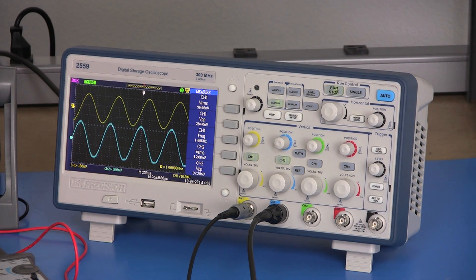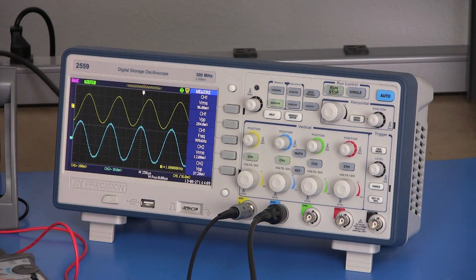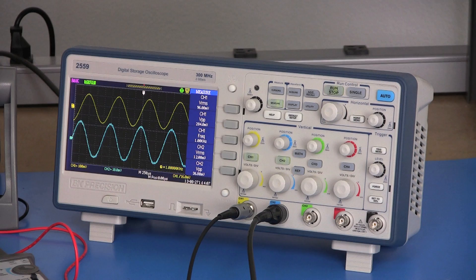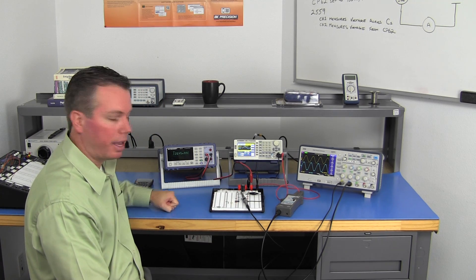And channel 2 is the blue trace. That is measuring the output voltage from the CP62 current clamp. It is measuring 12 millivolts. And you can see here I've got 126 milliamps.